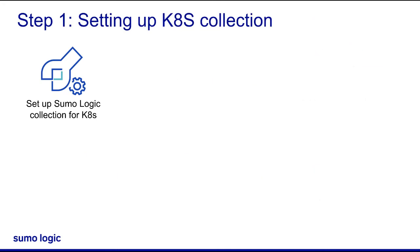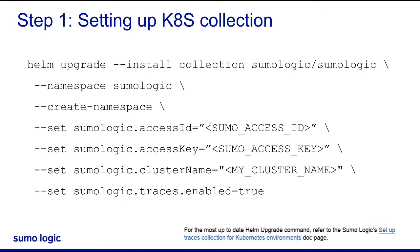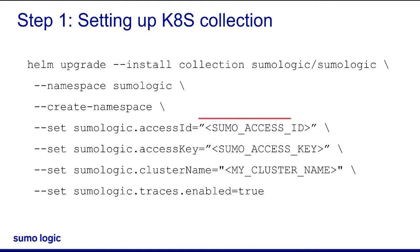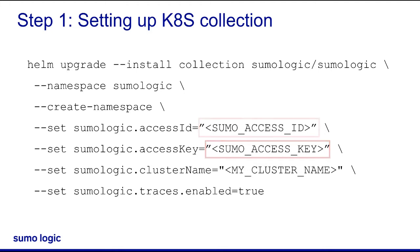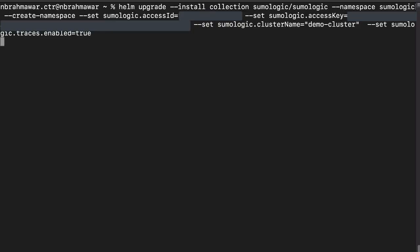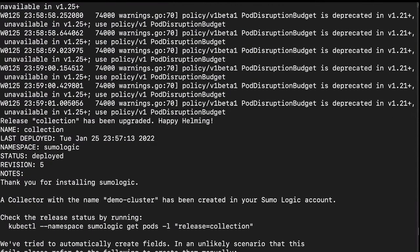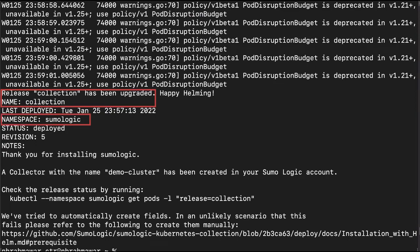First, I'll set up the collector and source for Kubernetes. To do so, I'll use the Kubernetes collection Helm chart, as it automatically sets up the collector and source for Kubernetes in Sumo Logic. Here's the Helm upgrade command. The most up-to-date command and Helm chart is available in the Sumo Logic documentation. Before using the Helm upgrade command, I must generate my Sumo Access ID and Sumo Access Key and keep them handy. If you need help creating the Access ID and Access Key, please refer to the Managing Access Key how-to video on the Sumo Logic YouTube channel. Now that I have all the required details, I'll use the appropriate values in the Helm upgrade command and execute the command in a terminal window. Here, I've used the release name 'collection' and the namespace 'Sumo Logic'.